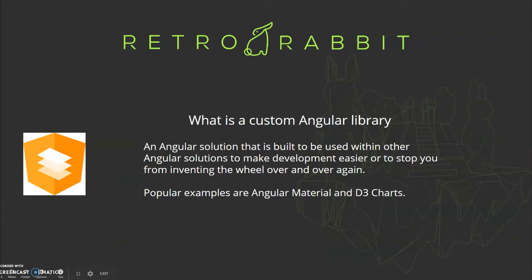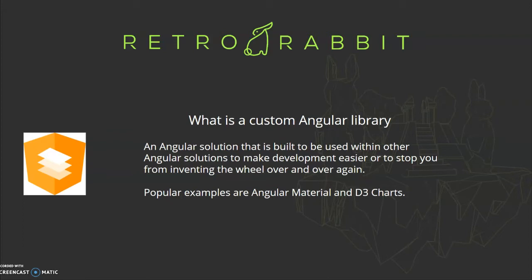So what is a custom Angular library? It's an Angular solution that is built to be used within other Angular solutions to make development easier or to stop you from reinventing the wheel over and over again. Some basic examples which are used quite often are Angular Material or D3 charts. Angular Material is one of the most used libraries for Angular because it allows you to implement user-related elements that are already styled and have functionality you would normally have to build from scratch.